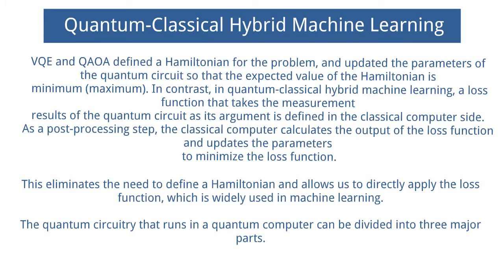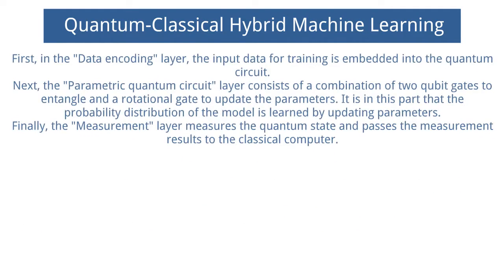The quantum circuitry that runs in a quantum computer can be divided into three major parts. First, in the data encoding layer, the input data for training is embedded into the quantum circuit.